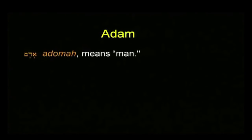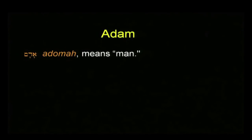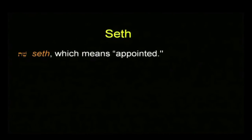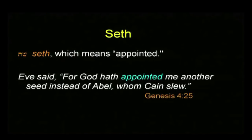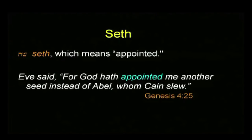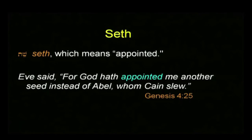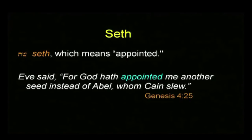Bear with me in Genesis 5. The first one is Adam, and that's pretty straightforward — Adoma means man. His son Seth means appointed. In chapter 4, Eve explains it. Eve said, 'For God hath appointed me another seed instead of Abel, whom Cain slew.' So the name Seth means appointed.